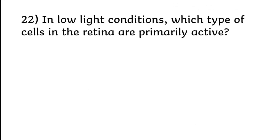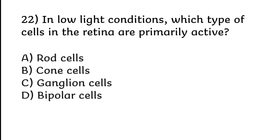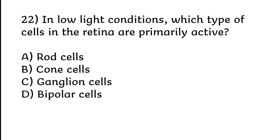In low light conditions, which type of cells in the retina are primarily active? Rod cells, cone cells, ganglion cells, or bipolar cells. Correct answer is option A, rod cells.